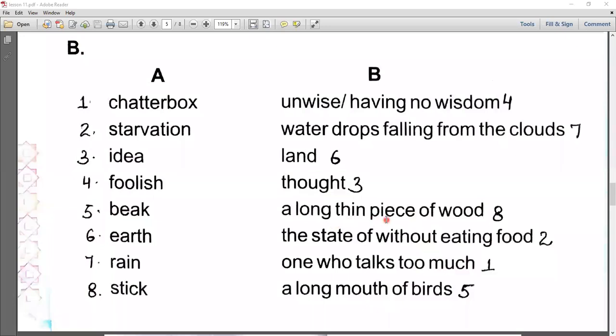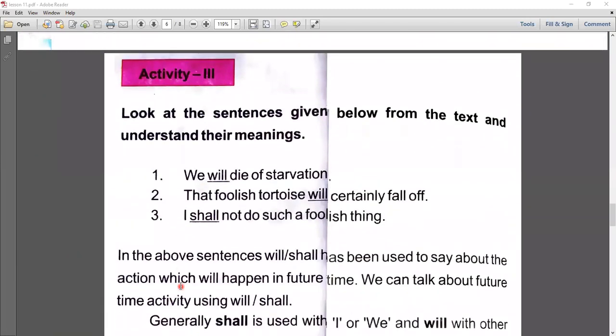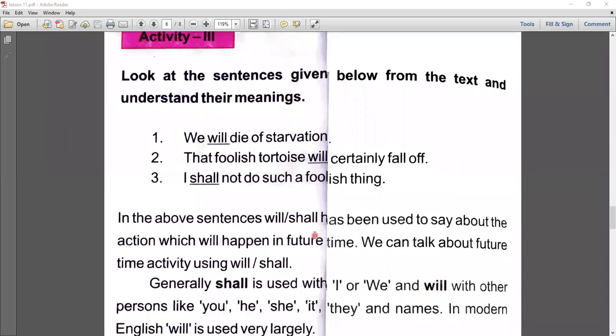Now let's move on to activity third. Look at the sentences given below from the text and understand their meanings. We will die of starvation. That foolish tortoise will certainly fall off. I shall not do such a foolish thing. In the above sentences, will/shall has been used to say about the action which will happen in future time.